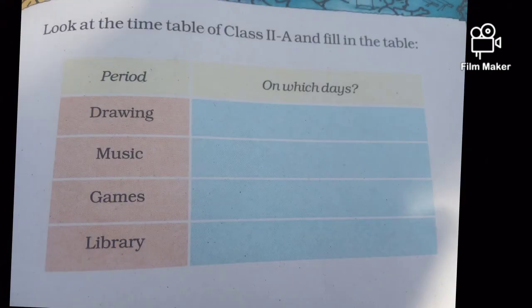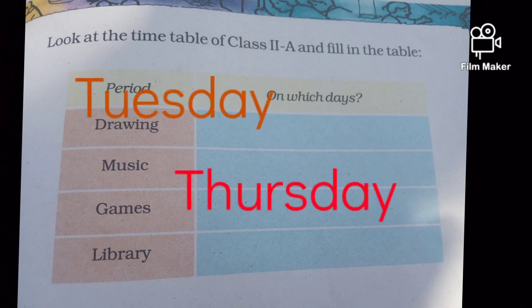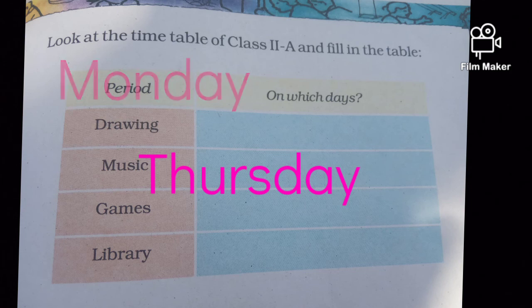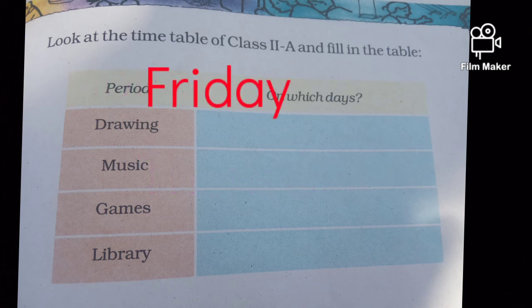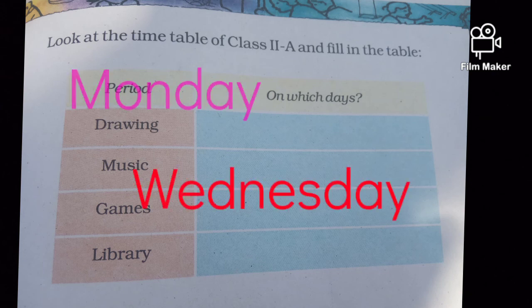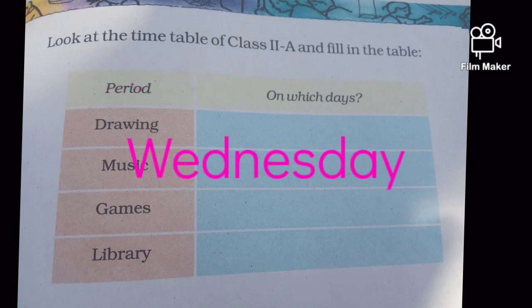Look at the timetable of class 2A and fill in the table. Drawing period — on which days? Tuesday, Thursday, and Saturday. Music period — Monday, Thursday, Friday. Games period — Monday, Wednesday, Friday. Library period — Tuesday, Wednesday, and Saturday.